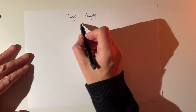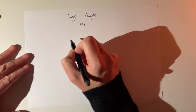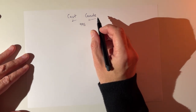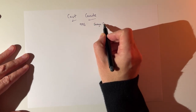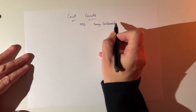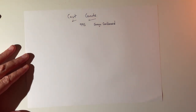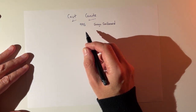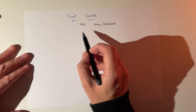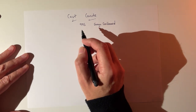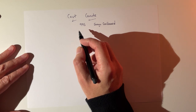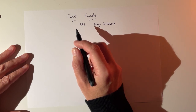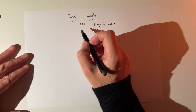Canute was born in about 995 AD, and he was the son of Swain Forkbeard, who I covered in a previous video because he was also King of England. Canute was basically a Danish Viking. This was a period when the Danes actually managed to reign in England for a while, and there were in total four Danish kings of England before the Anglo-Saxons regained control again.